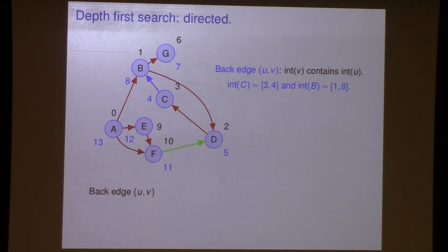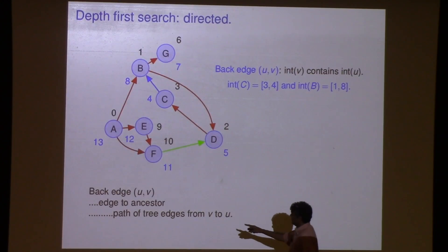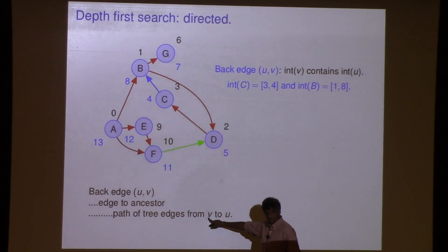So I believe, you know, I'm just putting it in a little bit more careful language, but it's what Professor Chiesa said. Path of tree edges to V to U because V is on the stack. V's interval contains U's interval. So V is on the stack.